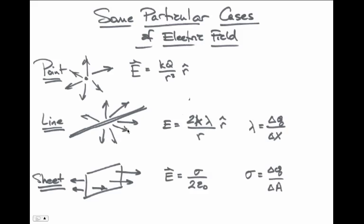For a line charge, the electric field lines point directly outward from the wire. For a sheet of charge, if we define sigma (Greek letter σ) as the charge per unit area (delta Q divided by delta A), the electric field points away from the sheet if sigma is positive, or toward the sheet if sigma is negative. The magnitude of the electric field from a sheet of charge is sigma divided by 2 times epsilon-0, where epsilon-0 is the constant in the MKS unit system.